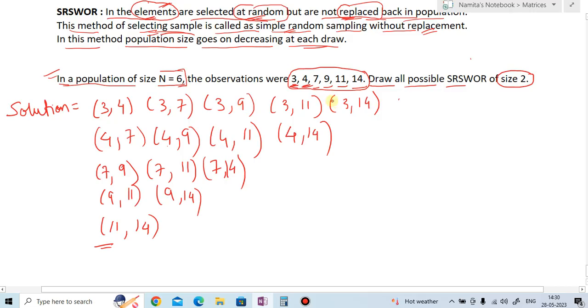So for the first, there are how many elements? 1, 2, 3, 4, 5. Then second, only 4 is there. Then third, 3 is there. And 2 population. And last is only 1. So it is decreasing.